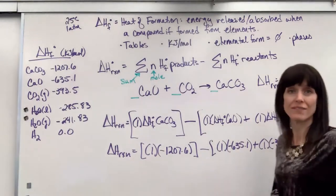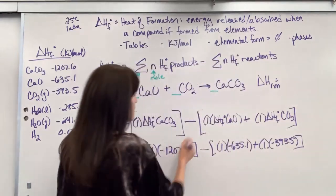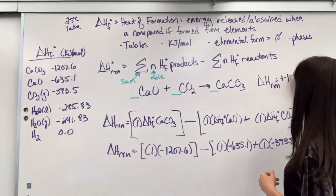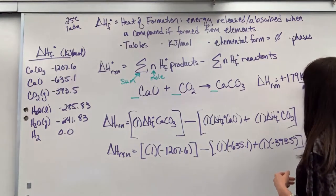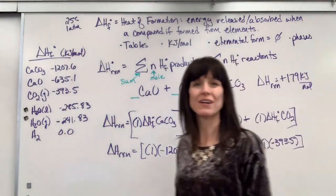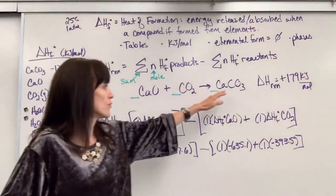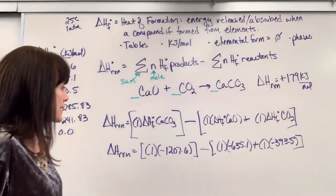So you plug all of this into your calculator, and the final heat of formation is a positive, it's endothermic, 179 kilojoules per mole. So we have to put 179 kilojoules into this reaction to make it form the calcium carbonate.